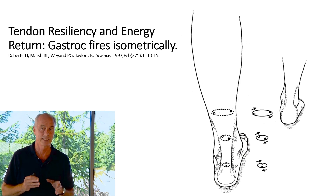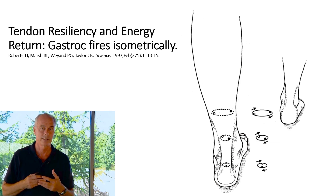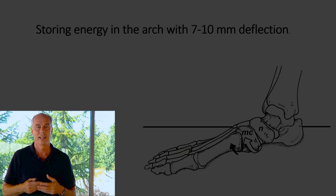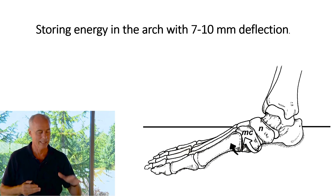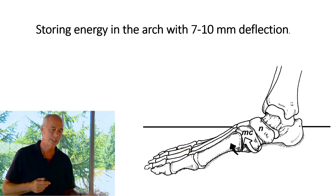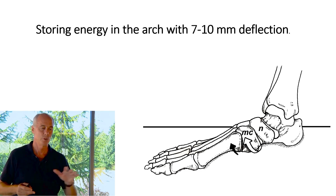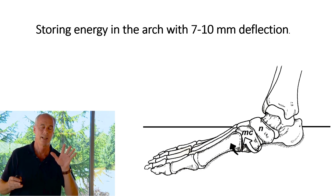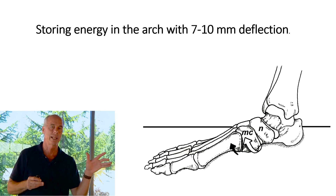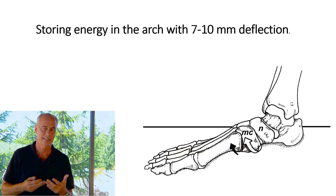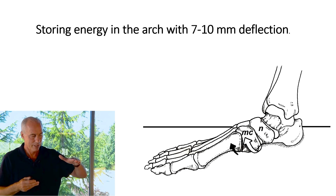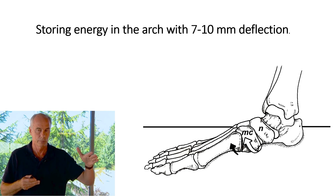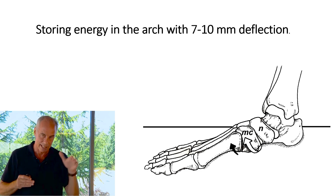You can store energy in the gastrocnemius and Achilles tendon, actin-myosin filaments can store energy, but you can also store energy in the arch. The fastest running times happen on tracks with a little bit of spring — not too much. Researchers showed that tracks that deflect 7 to 10 millimeters give just enough time to store energy and return it. Most world records in track and field are set on tracks with a natural spring to them. A study with ball bearings embedded in the foot bones showed the arch deflects that same 7 millimeters while running, storing and returning energy.